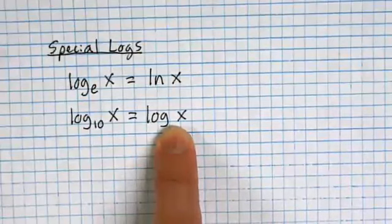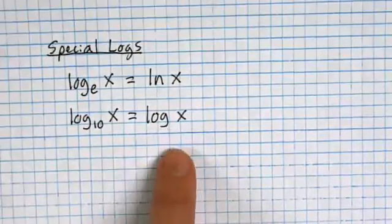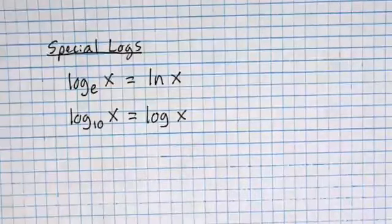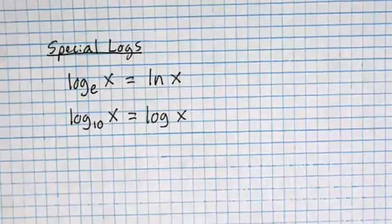Almost every culture in the world counts in base 10 these days, though not all. Why do we count in base 10? Nobody really knows for sure, but they think it's physiological. The classic answer is that it's easier — but it's not that it's easier, it's easier because we do it that way. If you learned to count in base 12, dividing by 12 would be just as easy. It's easy because you've learned it, not the other way around.